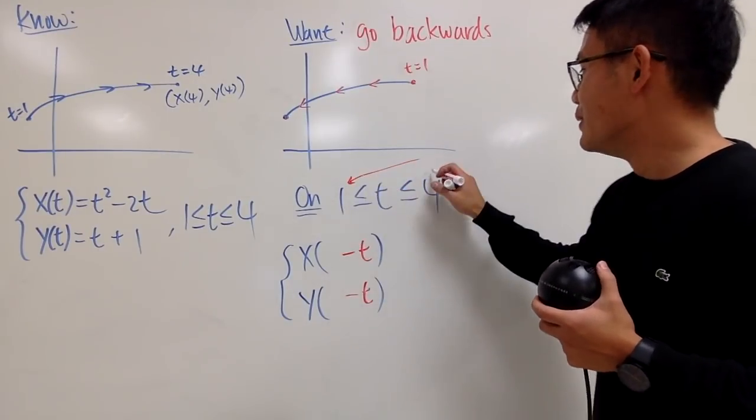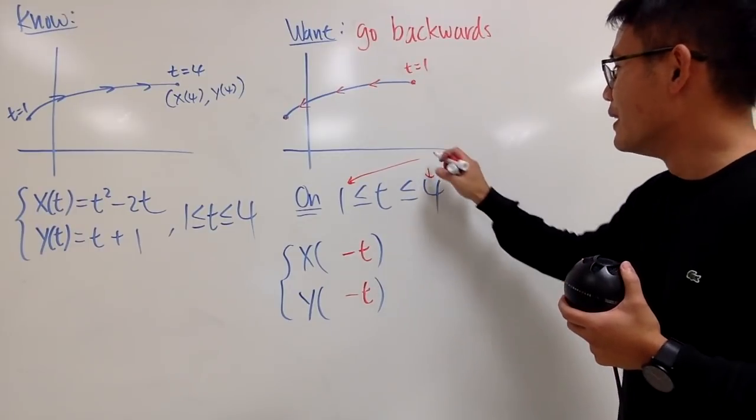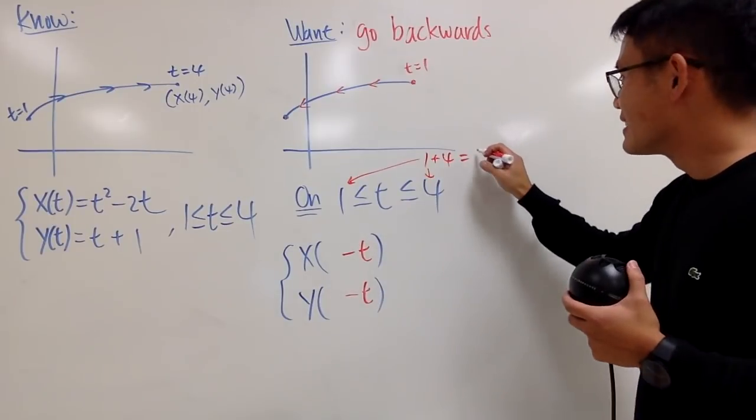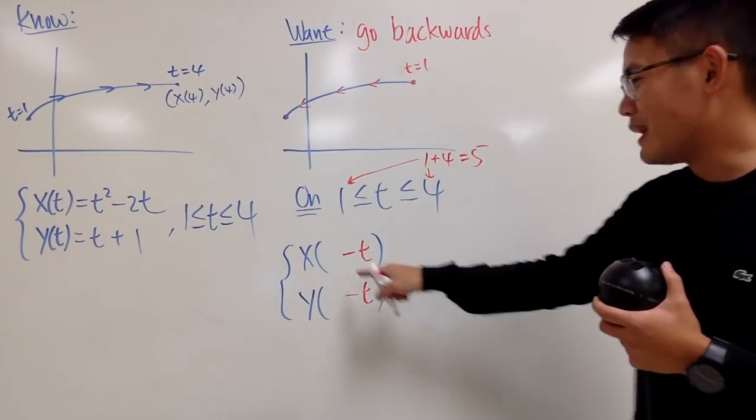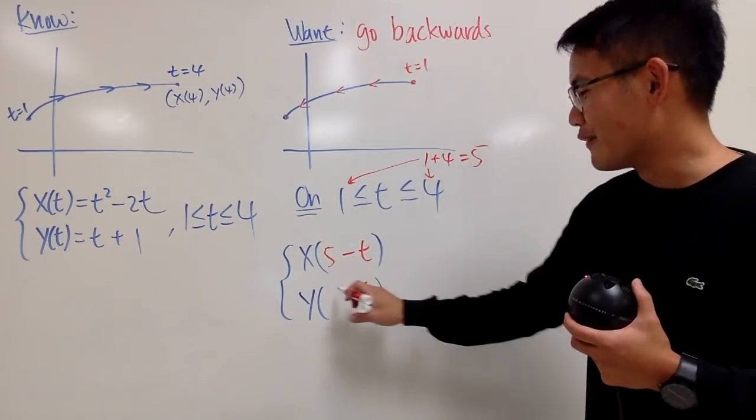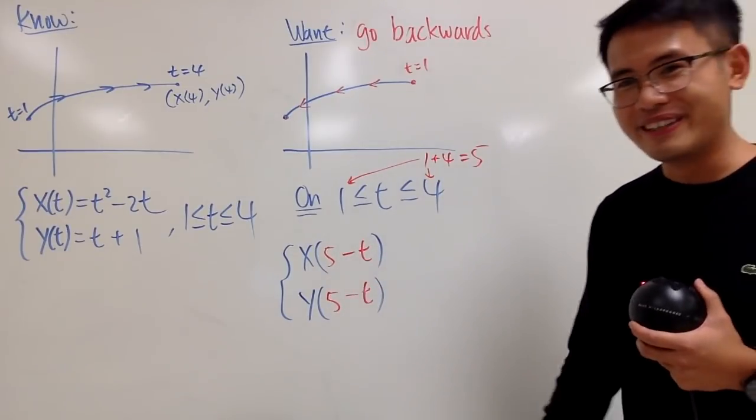So, what you do is look at the endpoints of the time interval. You just add them up. You always add up the endpoints. In this case, it's 5. And you just plug in 5 minus t into the x equation. And, of course, also do to the y equation right here. That's it.